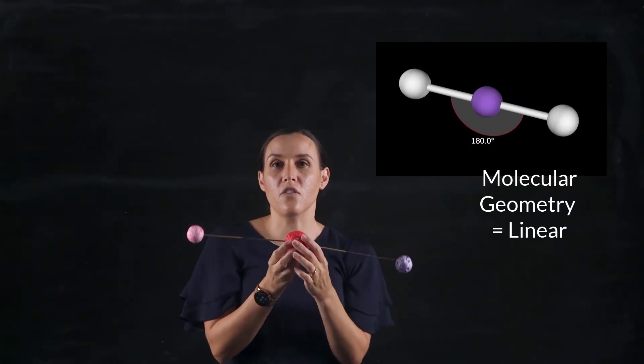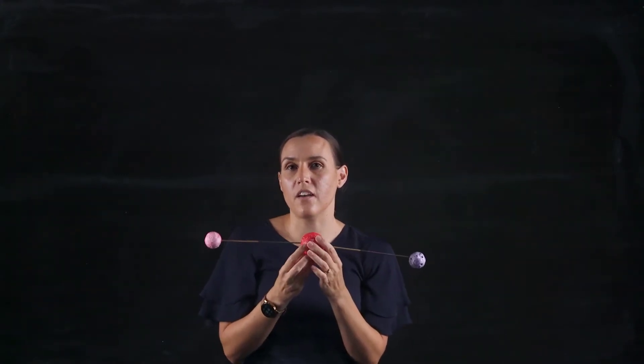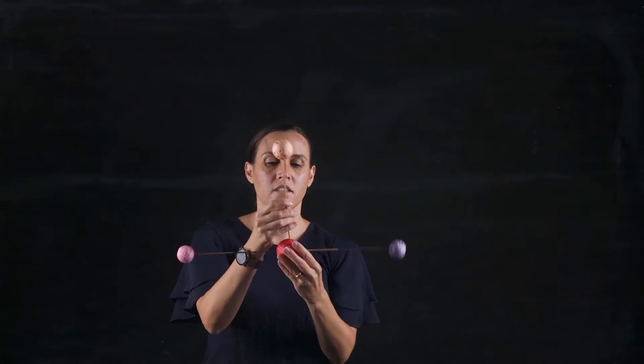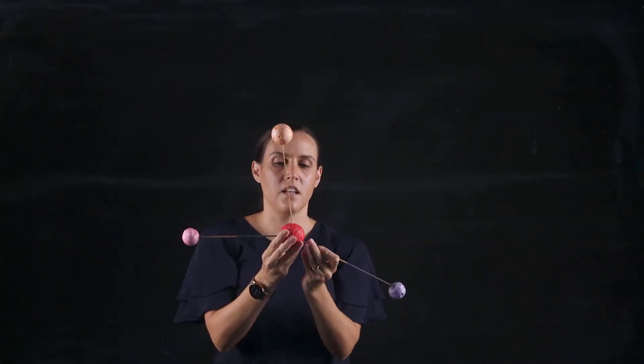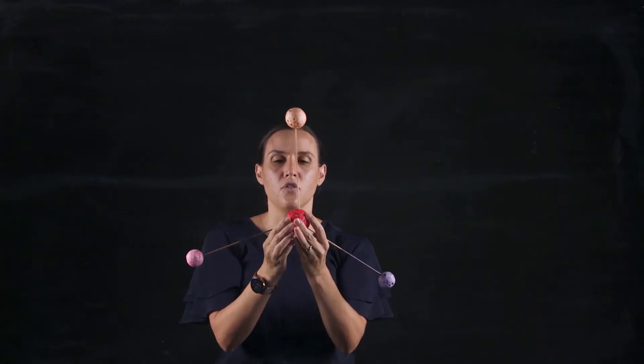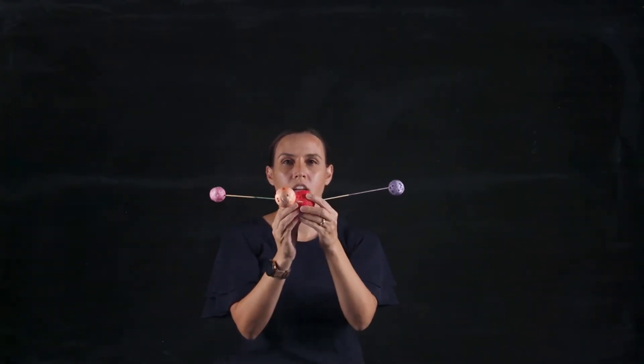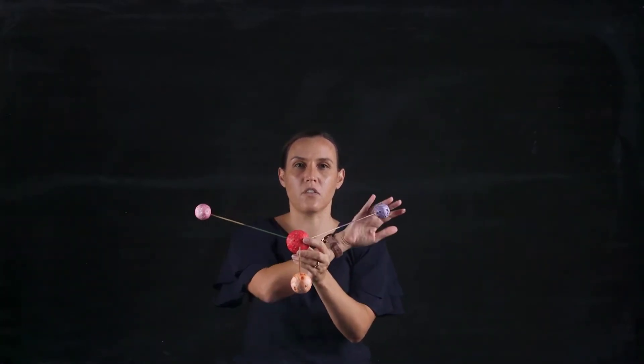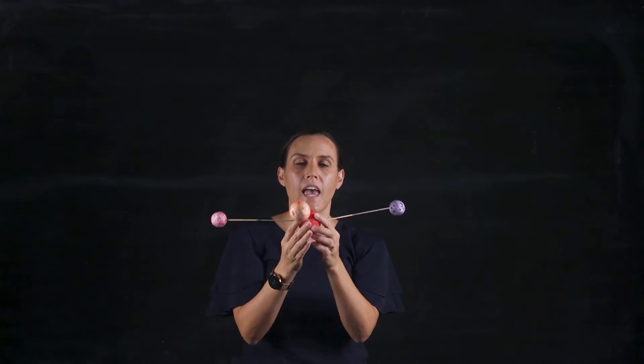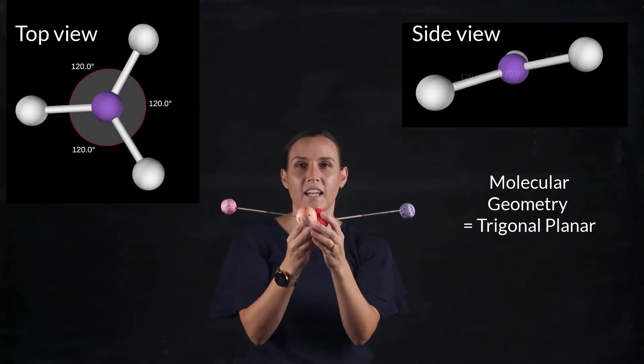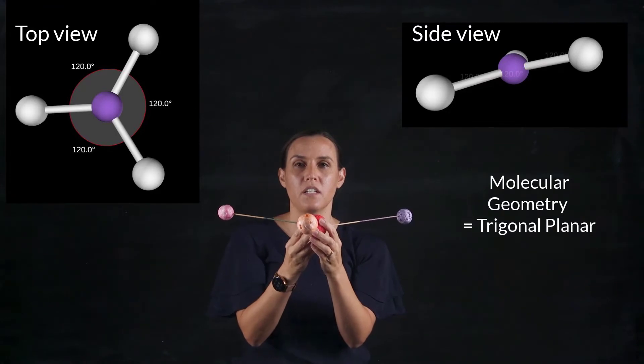Now if we were to introduce a third atom it will change the way they arrange themselves. If we bring in our third one it would stay on the same plane but the other two would shift slightly to allow that one to come in. We call this shape trigonal because it's got three atoms on it and it's planar because it's in one plane. So it's a trigonal planar geometry for that particular shape.